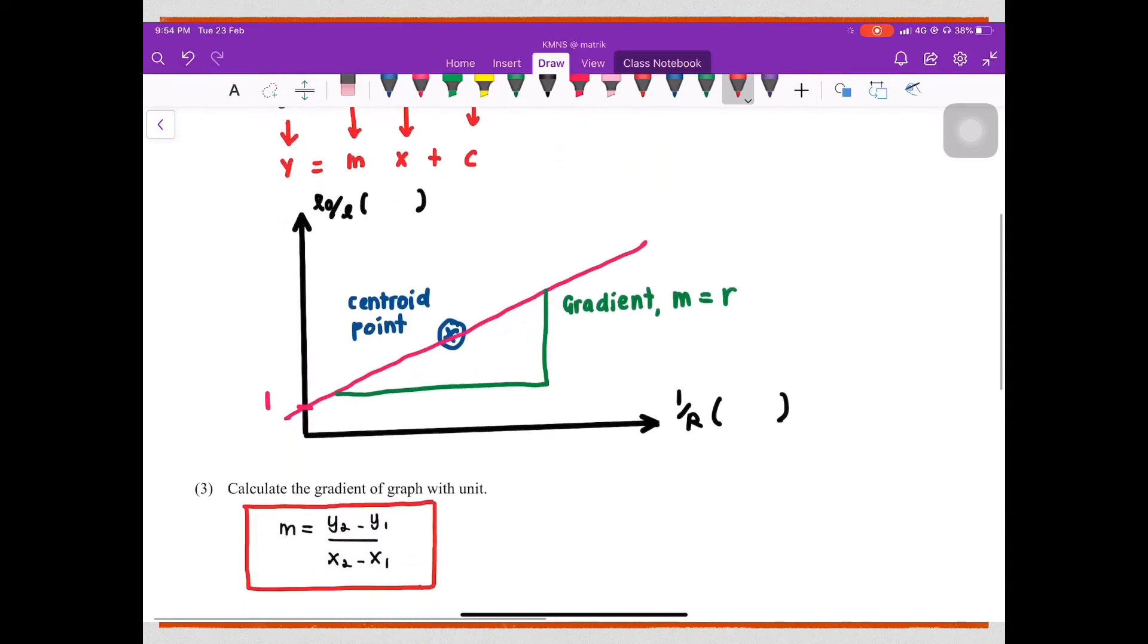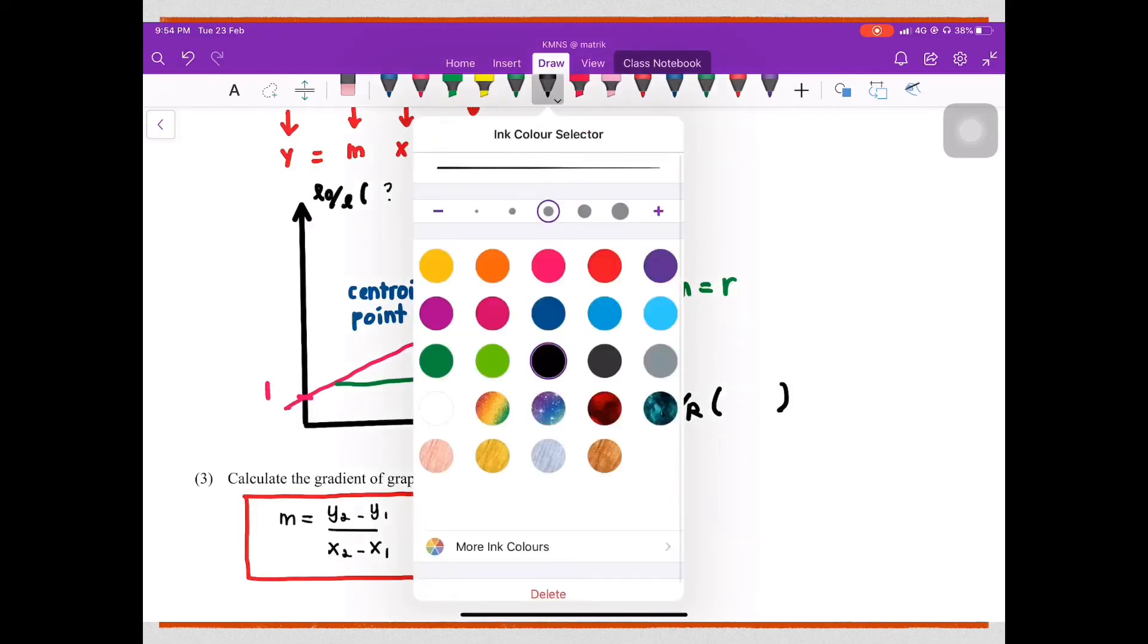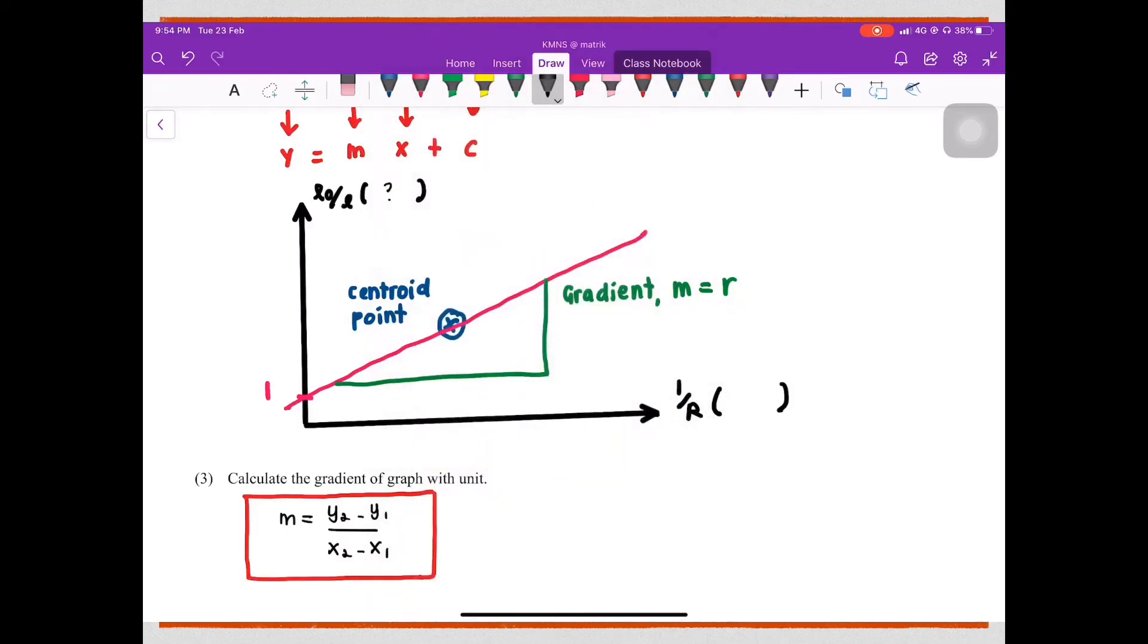Okay, next refer to the graph. Basically, we need to label with unit L0 over L with unit. Please check what is the unit. And then 1 over R, what is the unit for 1 over R, and then we need to plot all the data.